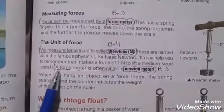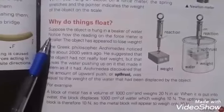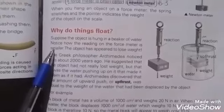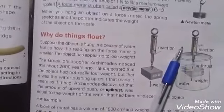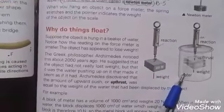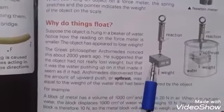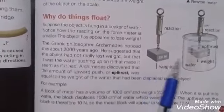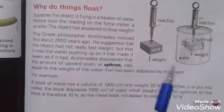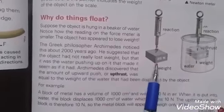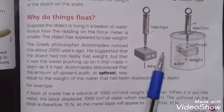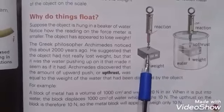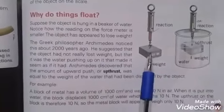How do things float? Suppose the object is hung in a beaker of water. Notice how the reading of the force meter changes. The object has appeared to lose weight. When the object is outside the beaker, outside the water, the weight is 20 Newtons, and in the water only 10 Newtons. It means that when it is put into the water, the block displaces 1,000 cubic centimeters of water and weighs 10 Newtons. The upthrust on the block is therefore 10 Newtons.